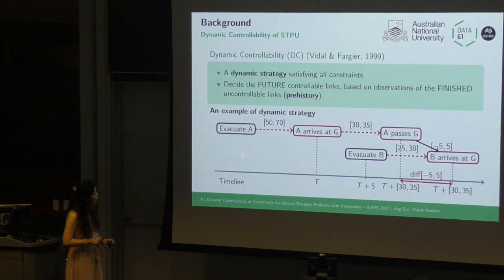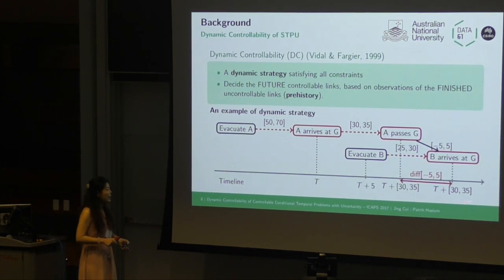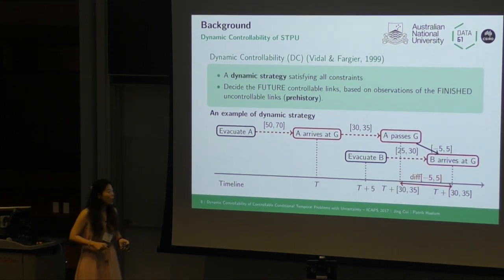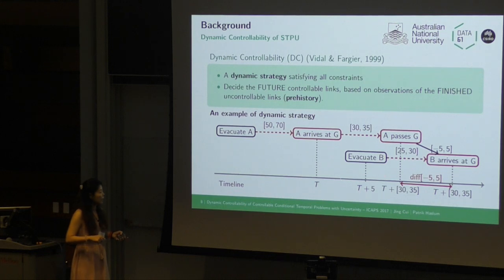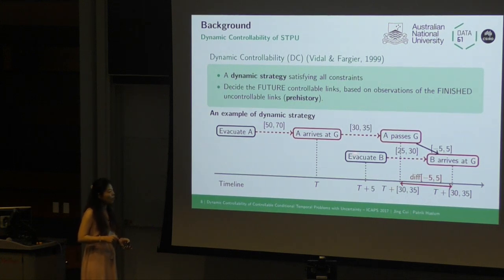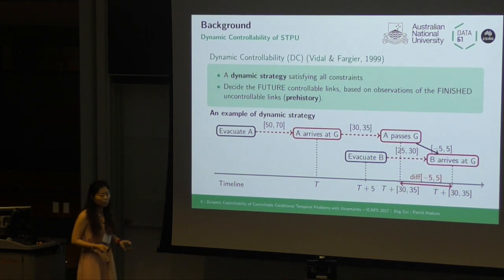For example, in evacuation planning, instead of giving a fixed time point to evacuate B, we can schedule based on observations of these contingent links. After the observation, five minutes later we evacuate B. Then no matter what happens for those two uncertain events, these constraints can always be satisfied.